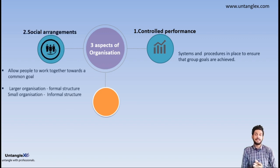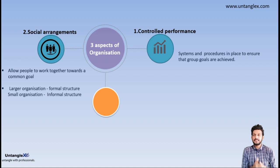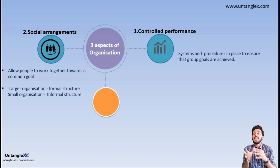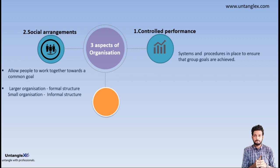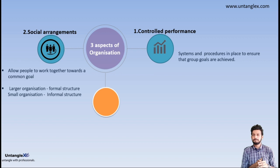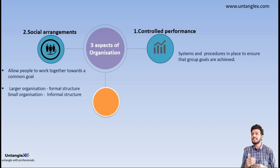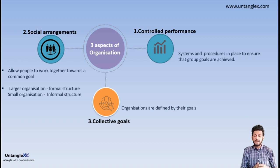The second aspect is social arrangement. There are some arrangements in the business to achieve the goal, so that group of people will work together to obtain the success of the organization. In a larger organization the structure will be formal, and in a small organization the structure will be informal, depending upon the size.